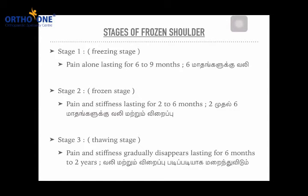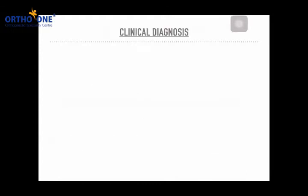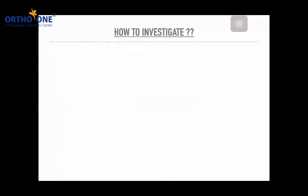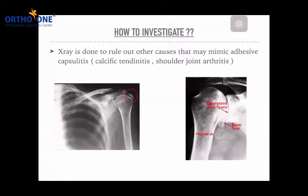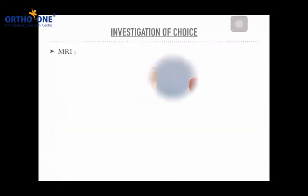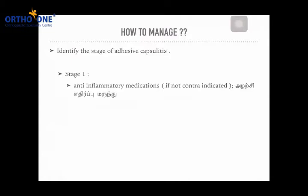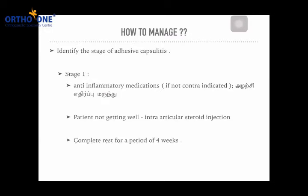It is very important not to neglect shoulder pain and stiffness at any age. The most important signs are stiffness and tenderness. Treatment begins with patient education. Stage one is treated with anti-inflammatory medications prescribed by a qualified medical practitioner, and patients not responding to tablets may benefit from a steroid injection into the shoulder joint, provided it is not contraindicated. Complete rest for four weeks will definitely reduce the inflammation, after which exercises can continue.